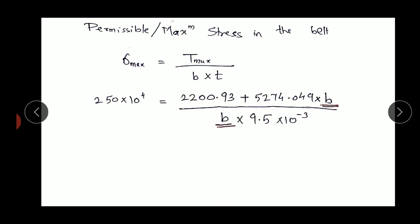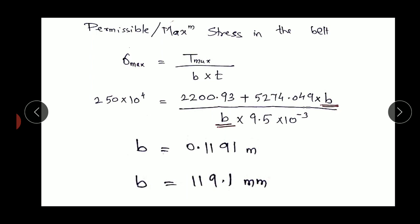Solving the equation, b = 0.119 meters, or 119.1 mm. That is the final answer — the width of the belt considering the effect of centrifugal tension while transmitting 30 kilowatt power with the belt drive as per the given data. Thank you all, see you in the next session.